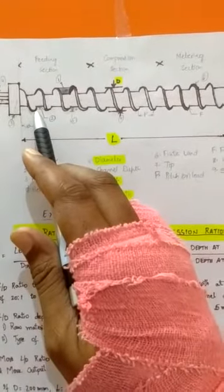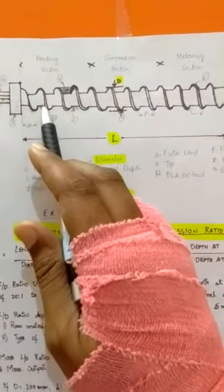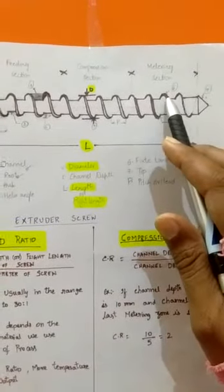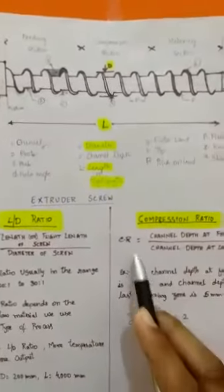So the channel depth of the feeding zone divided by the channel depth at the last meter zone. The ratio of this is the compression ratio.